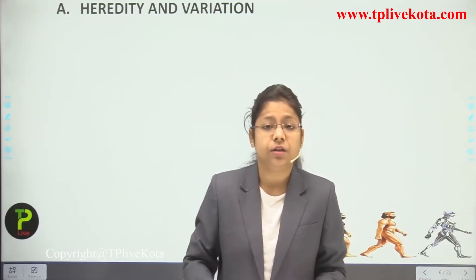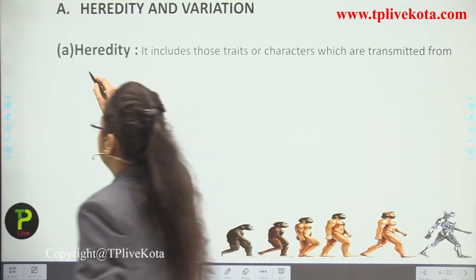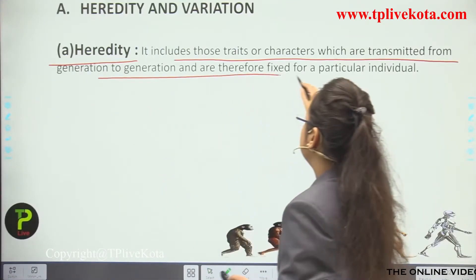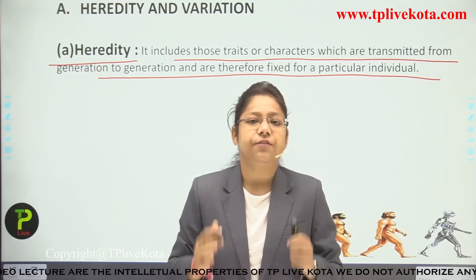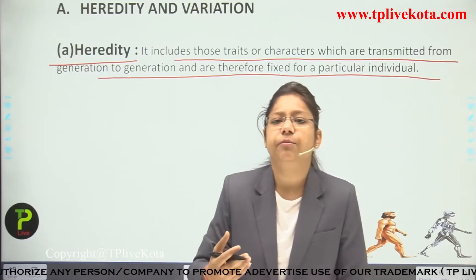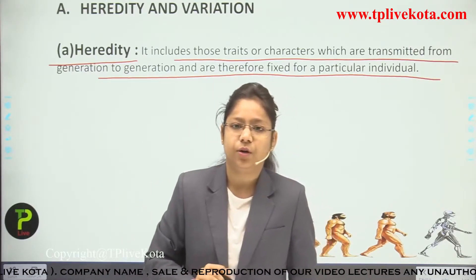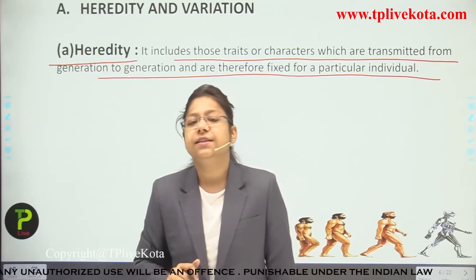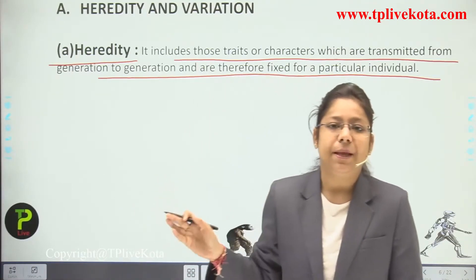Now we start formally with heredity and evolution. Heredity includes those traits or characters which are transmitted from generation to generation and are therefore fixed for a particular individual. You often hear the term 'heredity problem' — for example, if someone has specs, they might say it is a heredity problem because it has been transferred from the parent. The gene was developed in the father and transferred to the child.